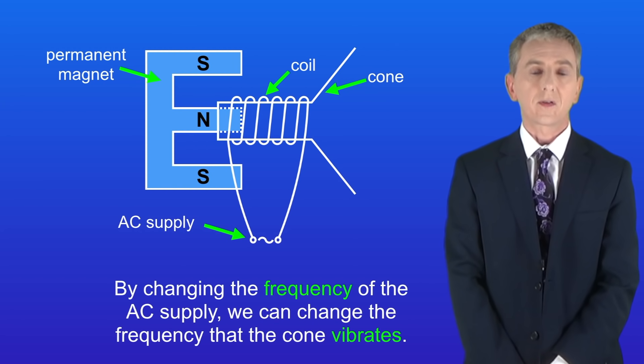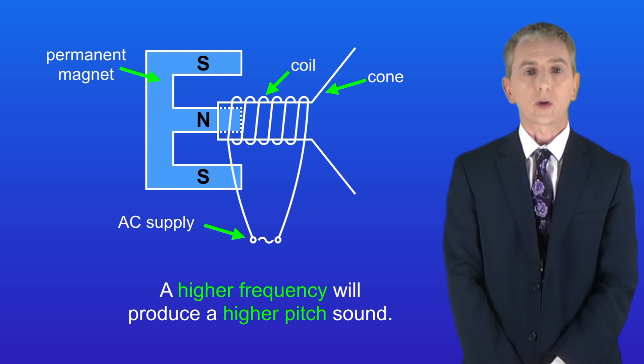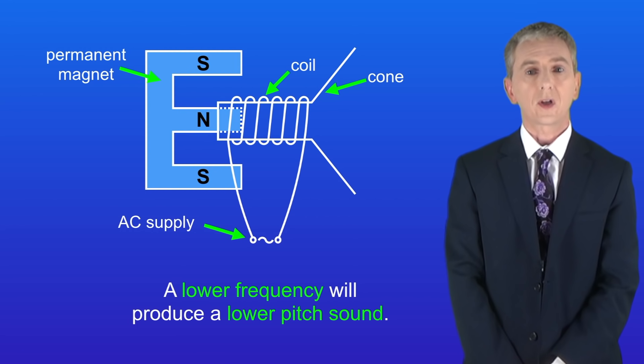By changing the frequency of the AC supply, we can change the frequency that the cone vibrates. A higher frequency will produce a higher pitch sound, and a lower frequency will produce a lower pitch sound.